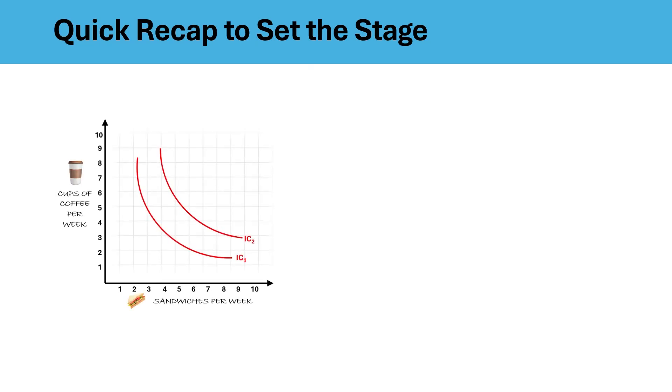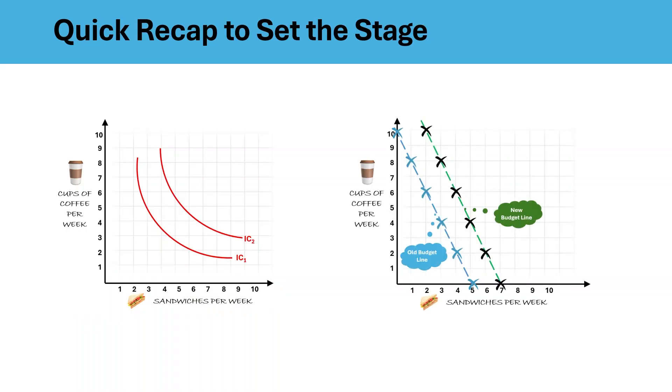Just to recap, remember, an indifference curve shows combinations of goods that give equal satisfaction and the budget line shows what a consumer can afford with their income and given prices of the two commodities. Today, we will learn how these two meet to find the optimal choice or equilibrium.